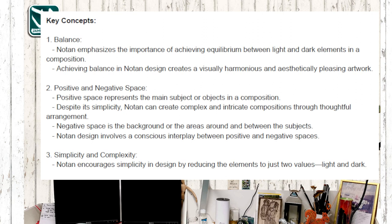Notan emphasizes achieving equilibrium — balance — in a composition, creating visually harmonious and aesthetically pleasing work. Positive space represents the main subject or objects; negative space is the background and areas around and between subjects. Notan encourages simplicity by reducing elements to just two values — light and dark — so even mid-tones from a photograph are reduced down to either black or white.